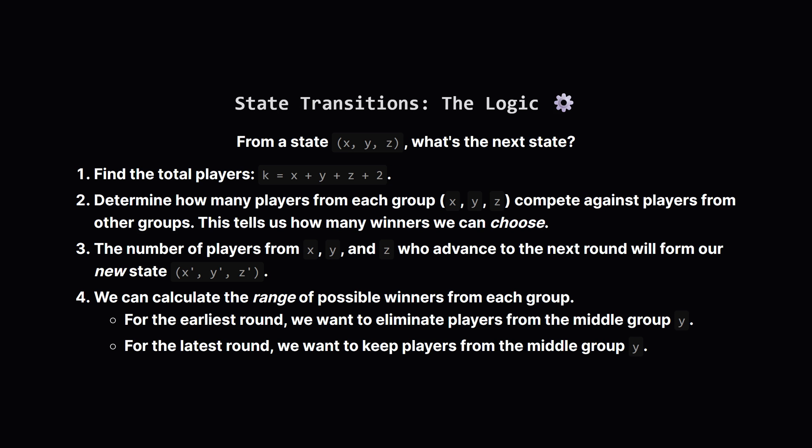This is the most complex part, so let's break it down. If we know the counts X, Y, and Z for the current round, how do we find the counts for the next round? The total number of players is X plus Y plus Z, plus our two special players. Some from the X group on the left will play against some from the Z group on the right, and some from the Y group in the middle might play each other. By figuring out these matchups, we can determine the minimum and maximum number of players from each group that can possibly advance. To find the earliest meeting, we make choices that shrink the middle group Y as fast as possible. To find the latest meeting, we do the opposite and try to keep Y as large as possible. This logic gives us the transition from one state to the next.